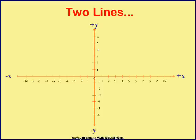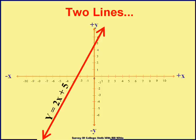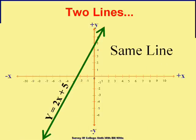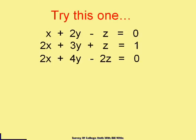There's another situation that can happen with two lines other than them intersecting and having a solution or being parallel and having no solution. What if I had two lines — here's one, y equals 2x plus 5 — and another one that was actually the same line? How many solutions would you have? How many places do those two lines touch? They're the same line — they're going to have an infinite number of solutions. This is going to happen, especially with three variables.